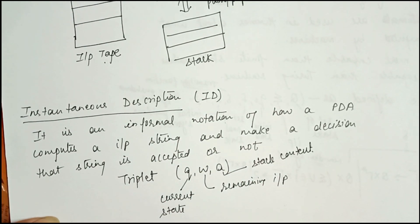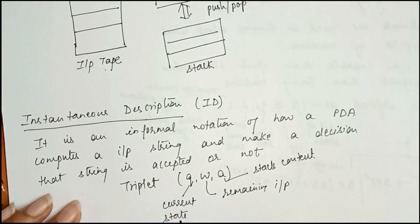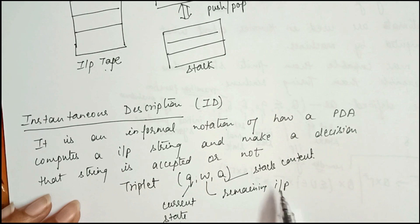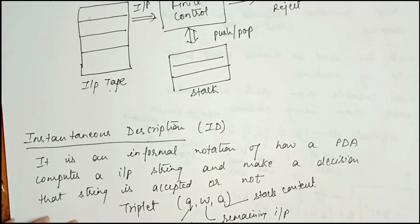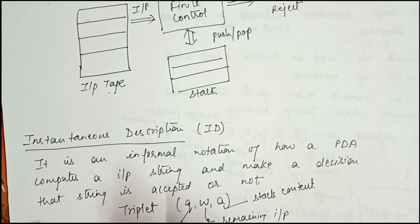We are going to use this ID in our next example. The ID is defined by a triplet (q, w, a): q defines the current state, w defines the remaining input, and a defines the stack content. This is the basic concept of PDA — it uses a special memory called a stack for pushing or popping symbols, with components input tape, finite control, and stack.